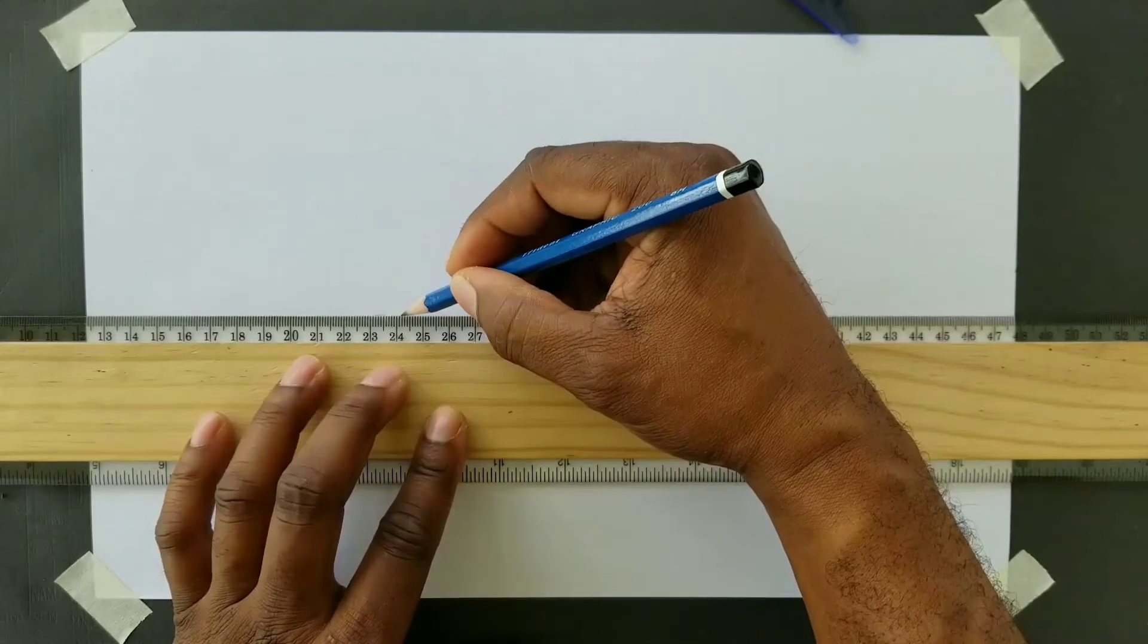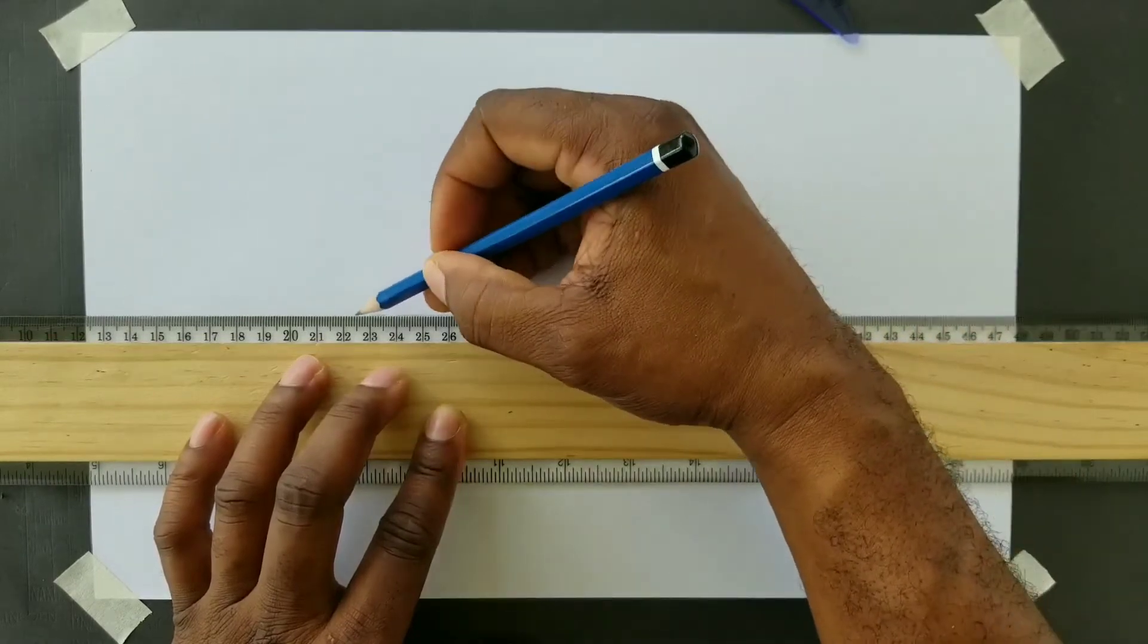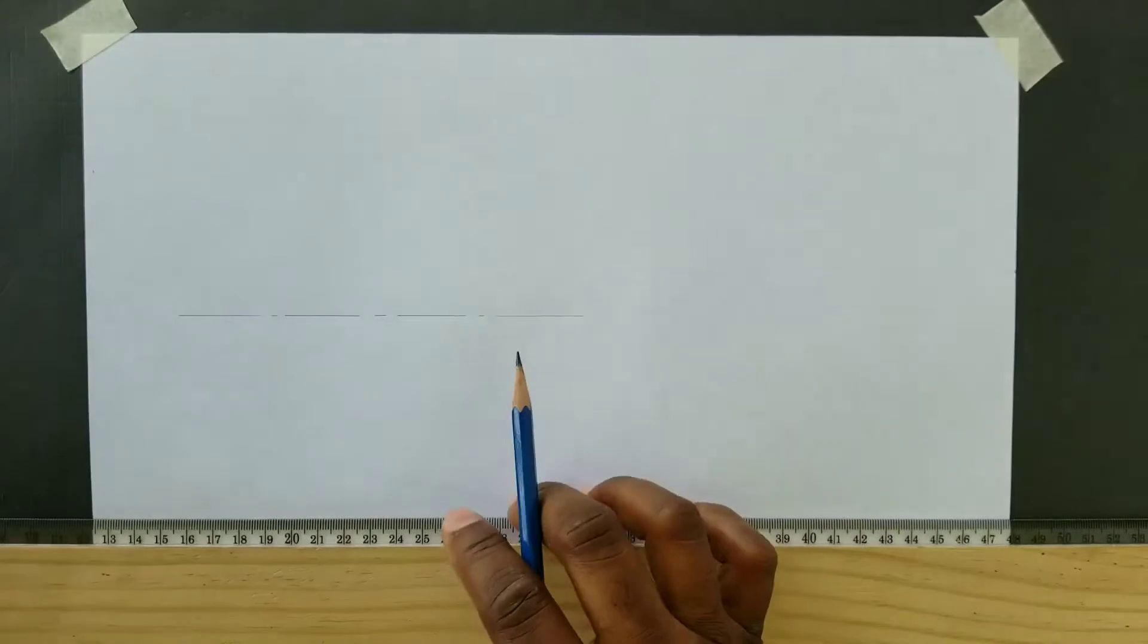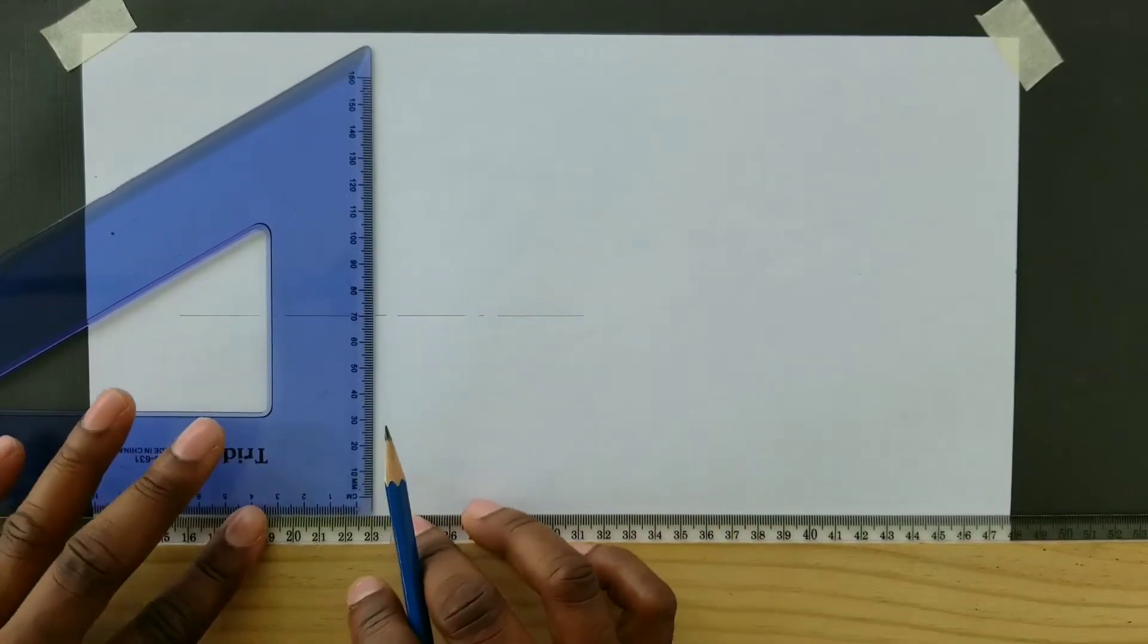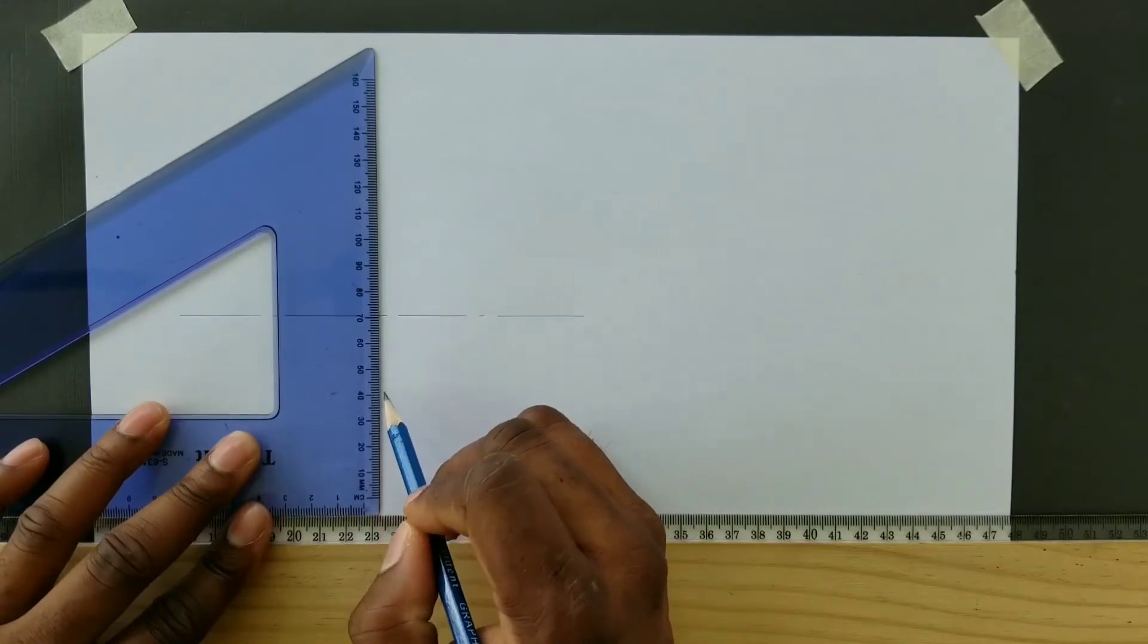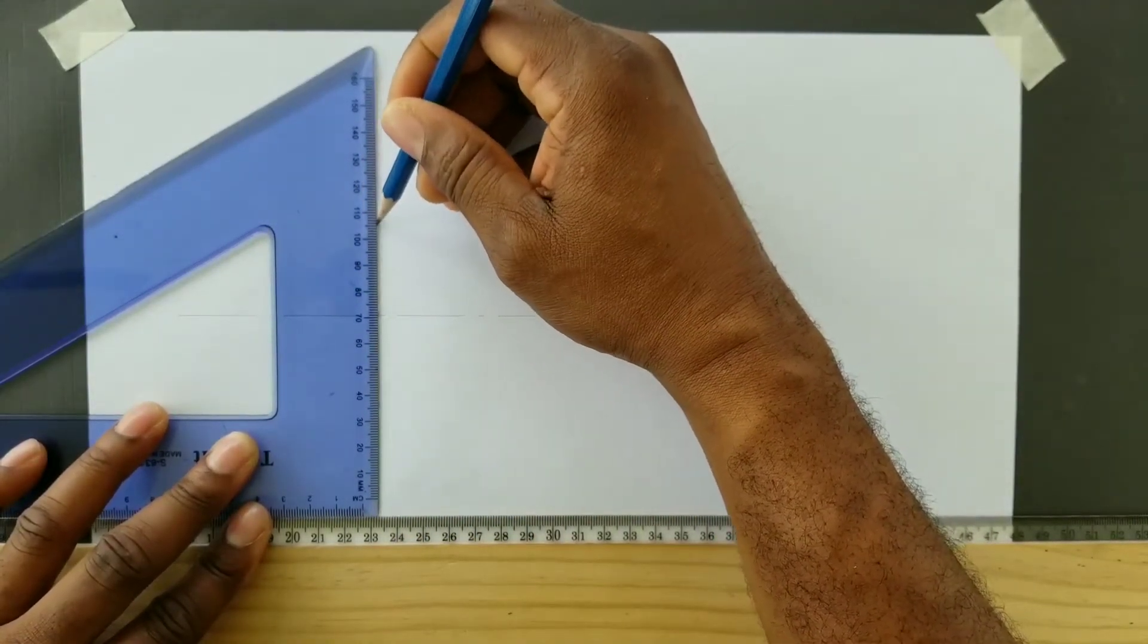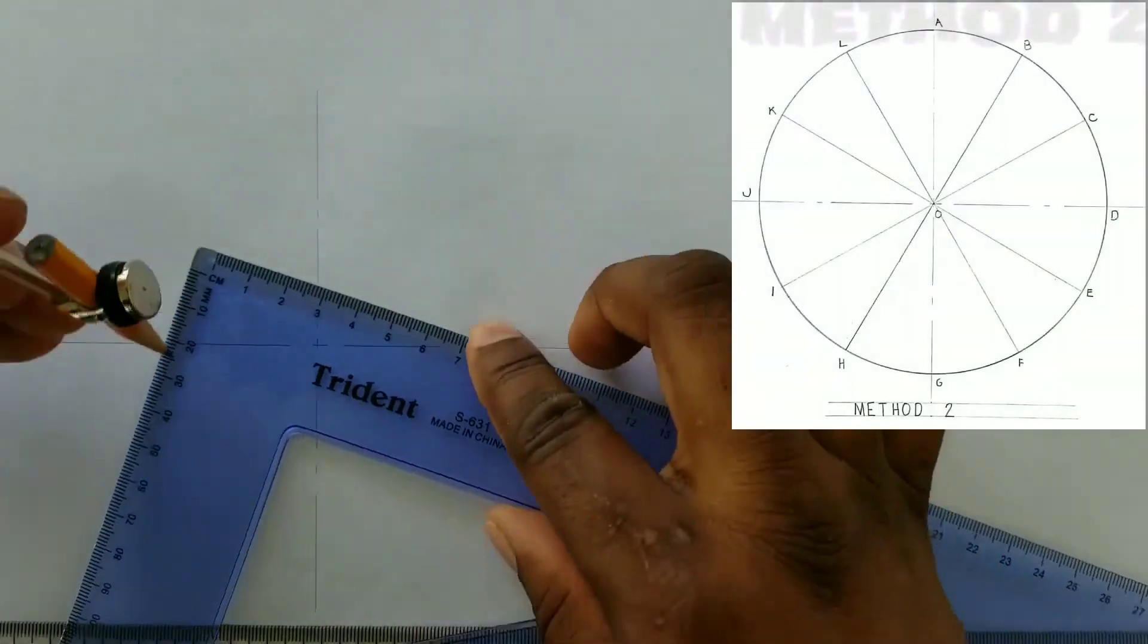We will first use center lines to identify the center of our circle. All center lines consist of alternating long and short dashes. Also ensure that your T-square is held firm against your drawing board. For the vertical center line, ensure your set square is sitting firmly on top of your T-square.